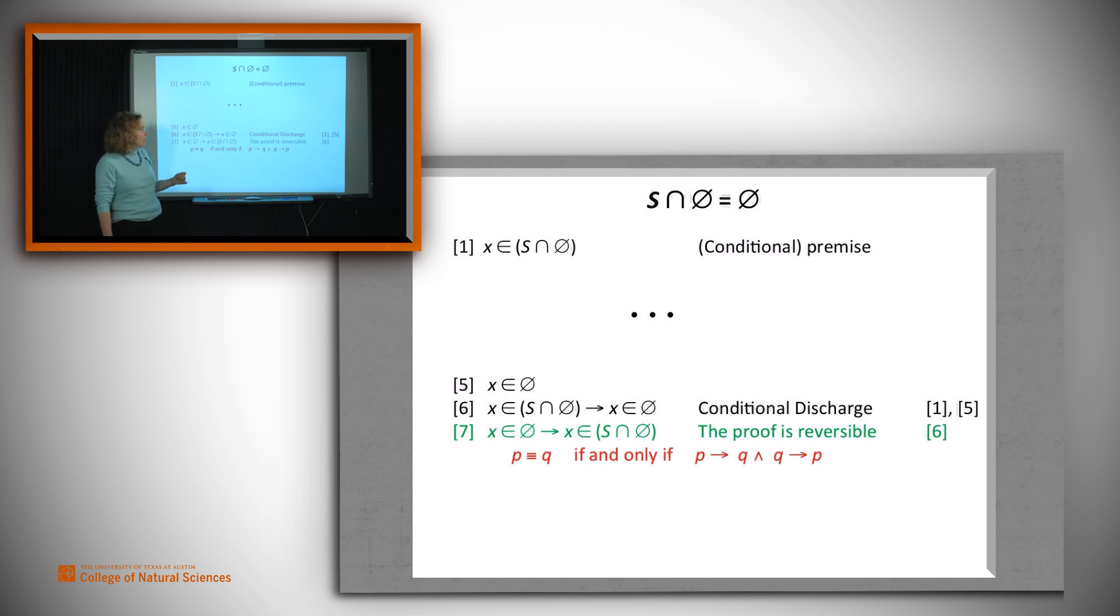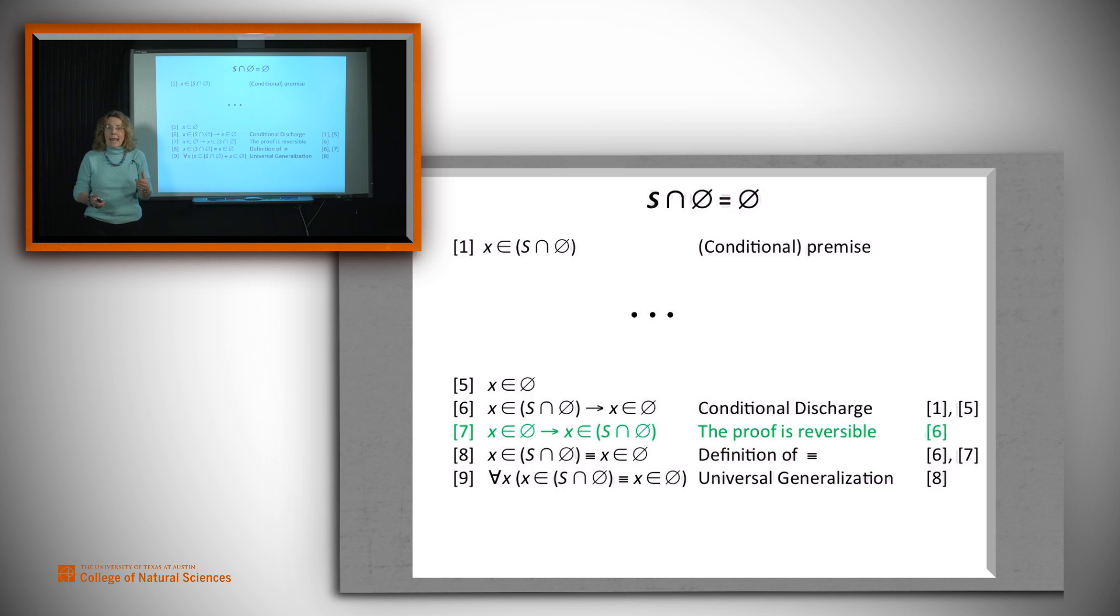Now recall that two claims are equivalent just in case P implies Q and Q implies P. That's the definition of P is equivalent to Q. So let's use that. And using that definition, we get that the claim that x is in one of the two sets is equivalent to the claim that it's in the other one. Now let's use universal generalization to go from our arbitrary x has this property to all x must have this property.